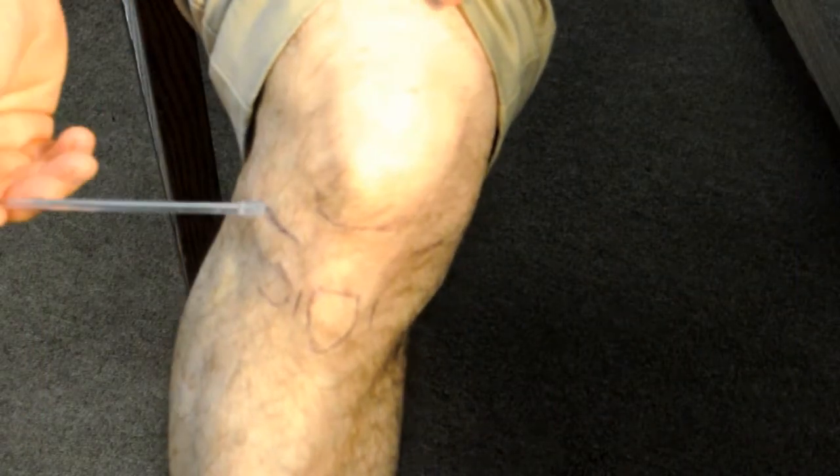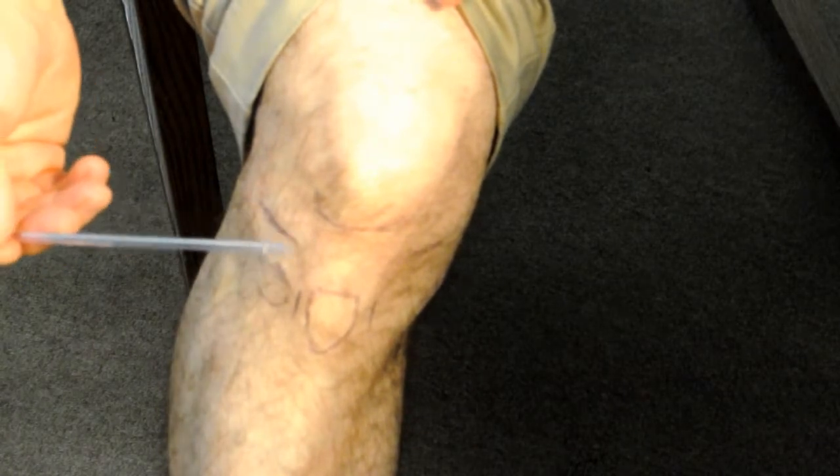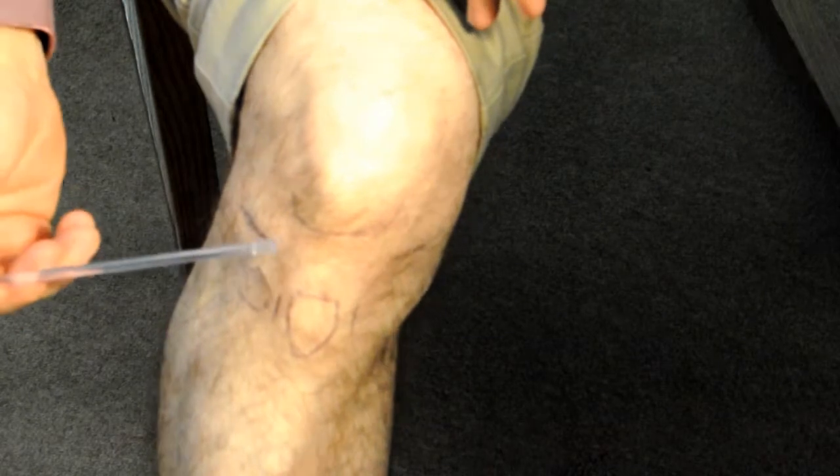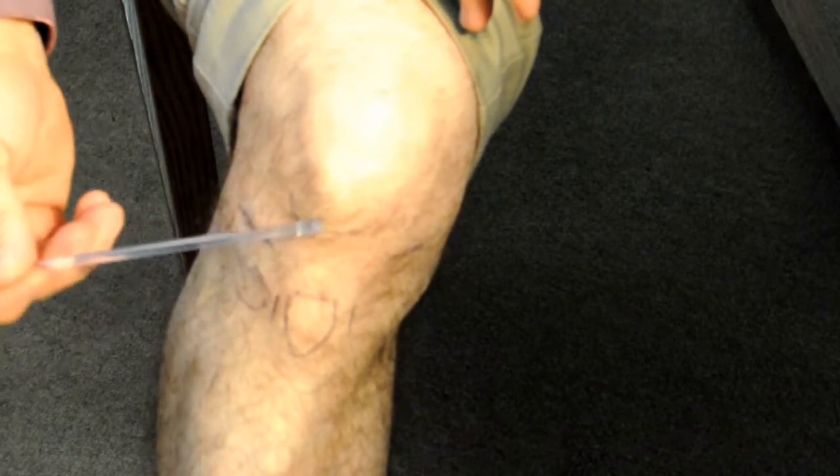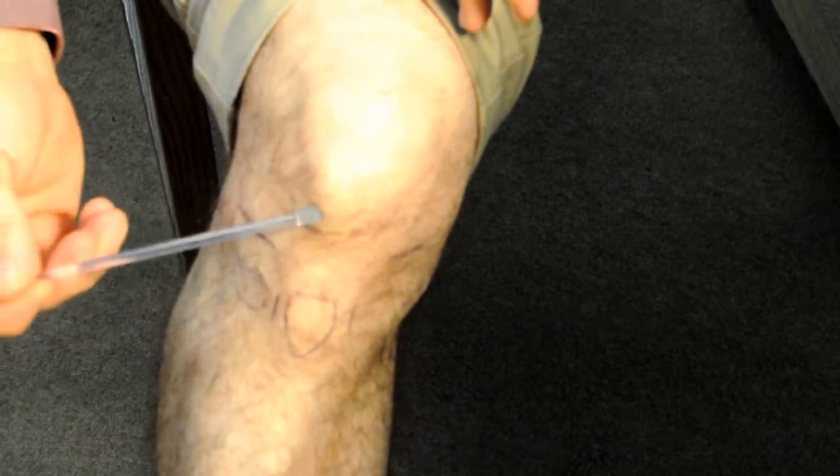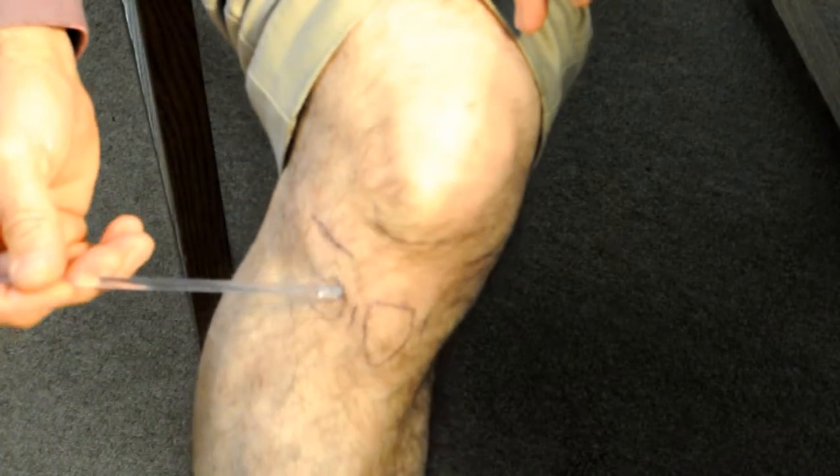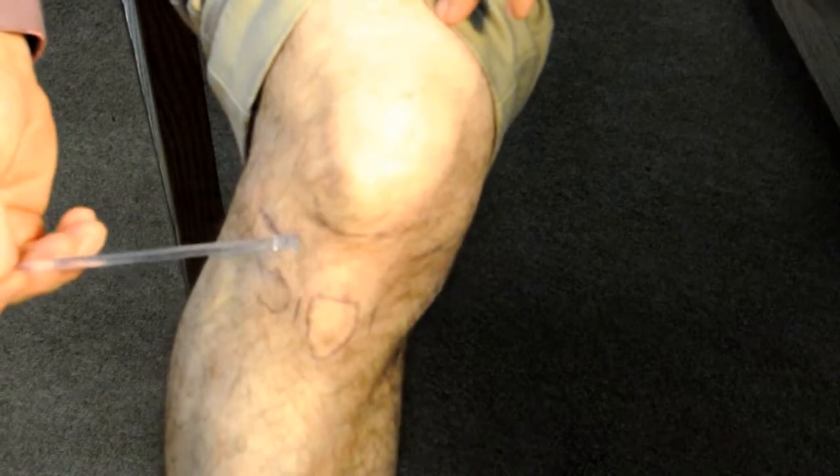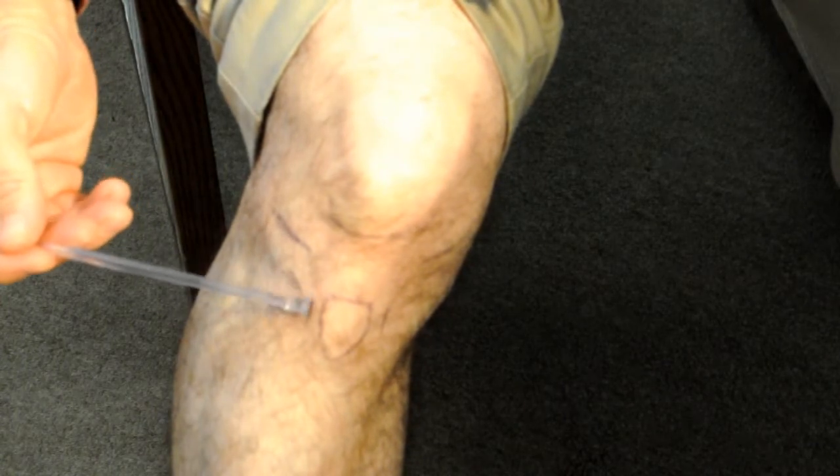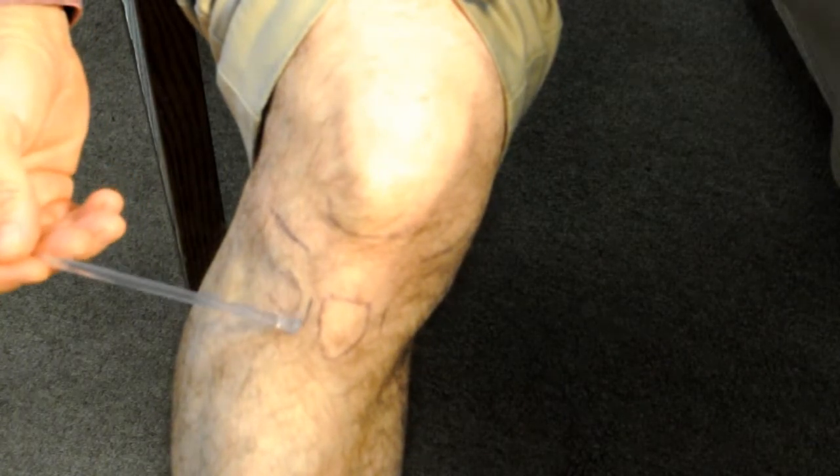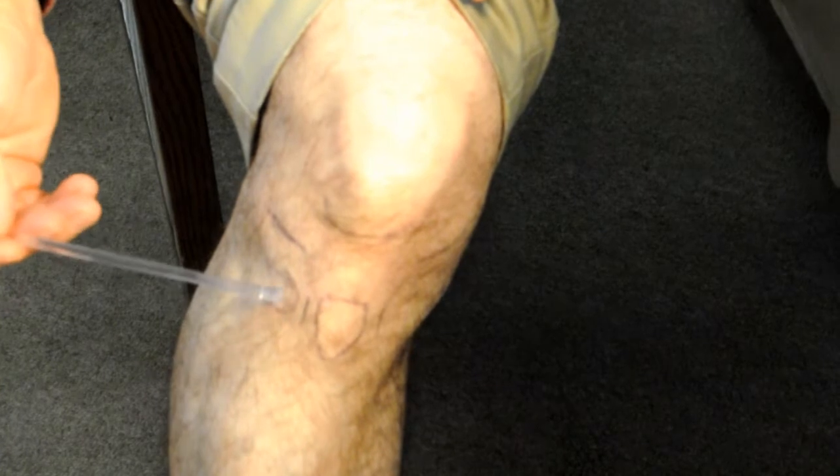For those not particularly familiar with this surface anatomy, you can see here on my right lower extremity that I have marked with pen the inferior aspect of the patella, the tibial tubercle, Gerdy's tubercle, and the lateral joint and medial joint lines.